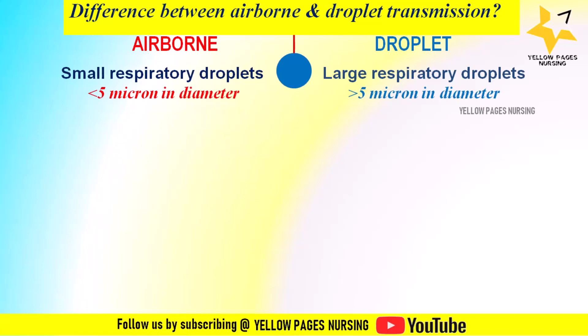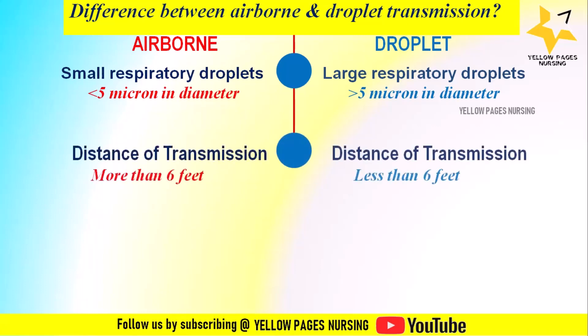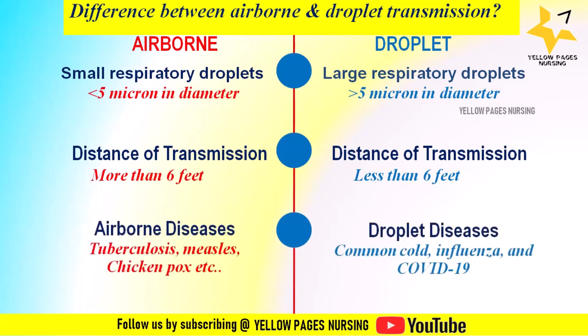In airborne transmission, germs are released and suspended in the air as a person talks, coughs, or sneezes, and may land on the eyes, mouth, or nose of another person. In droplet transmission, germs are transmitted through tiny droplets that are coughed or sneezed out from a sick person and get into contact with the eyes, nose, or mouth. The distance of airborne transmission is more than six feet, while droplet transmission occurs within less than six feet. Examples of airborne diseases include tuberculosis, measles, and chickenpox; examples of droplet-transmitted diseases include the common cold, influenza, and COVID-19.